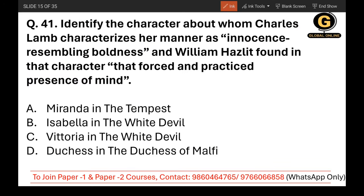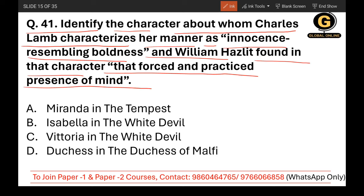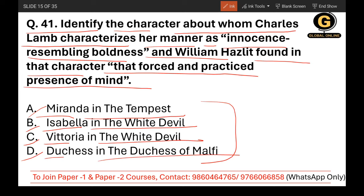Question 41: Identify the character about whom Charles Lamb characterizes her manner as 'innocence resembling boldness' and William Hazlitt found 'folds and practices of presence of mind.' The options are Miranda in The Tempest, Isabella in The White Devil, Vittoria in The White Devil, or the Duchess in The Duchess of Malfi. The correct answer is Vittoria in The White Devil, which is written by John Webster and was first performed in 1612.